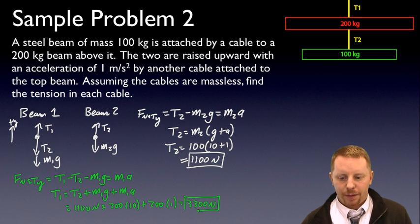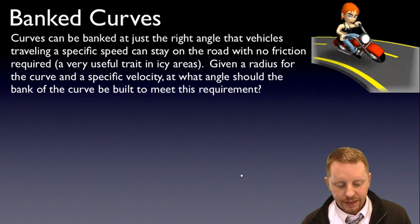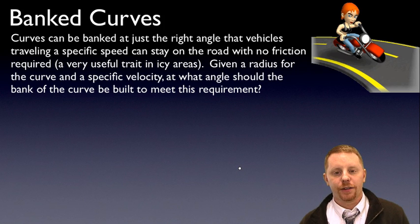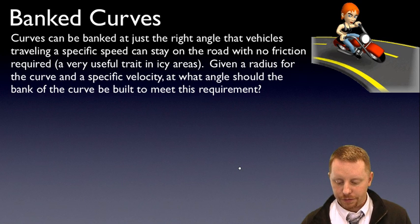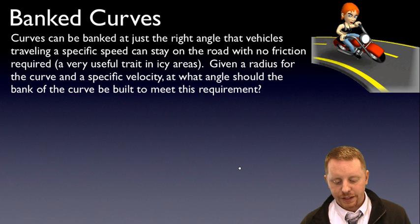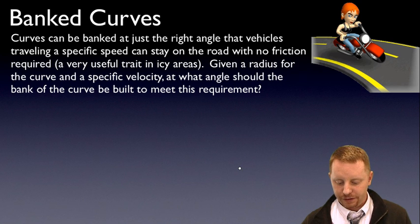Let's take a problem that has multiple dimensions, a slightly more complex problem. It's possible to bank a curve at just the right angle that a vehicle traveling a specific speed across it, around that curve, doesn't need any friction to maintain its path on the curve. It's a very useful trait in areas where the roads freeze over quite often. Given a radius for the curve and a specific velocity, at what angle should the bank of the curve be built to meet this requirement?